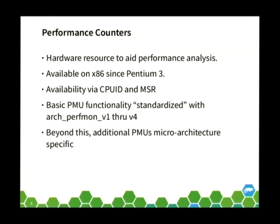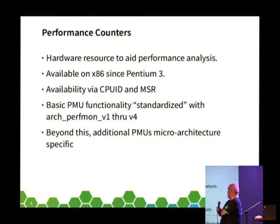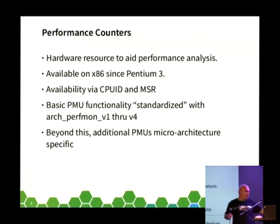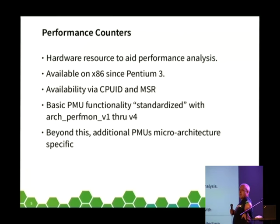I'm going to talk a little bit about performance counters. In the old days you'd use tools like prof, which were basic bucket-based software profilers. These days, if you want to do something like that, you're better off using Valgrind. Performance counters are a hardware resource to aid in performance analysis, available on x86 since Pentium 3. Availability is through the CPUID instruction and the MSRs — the model-specific registers. You'll see the term 'arc perfmon' used a lot, which stands for architectural perfmon, meaning Intel has agreed it will be available in future architectures, providing about seven or eight counters.